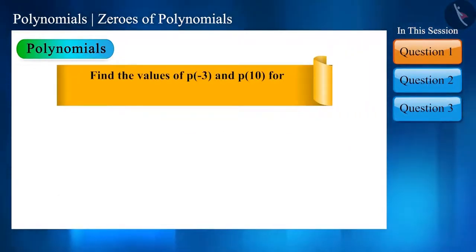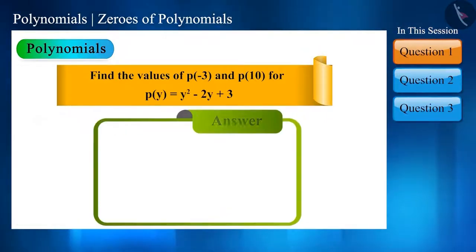the polynomial p of y equal to y square minus 2y plus 3. This is a very easy question. Let us find p of minus 3 first. You can also solve this question with me.